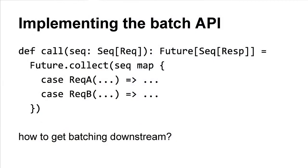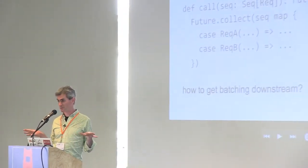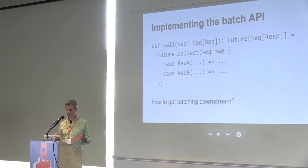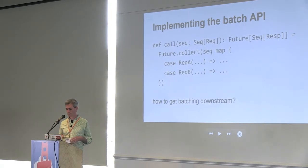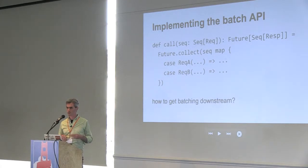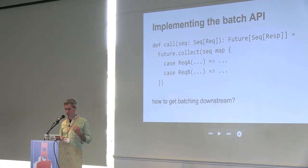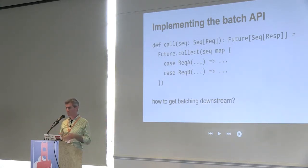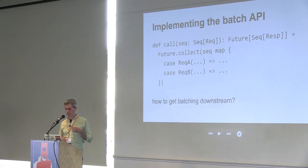This problem also comes up on the server side, where we want to implement a heterogeneous batch API. We've got a sequence of requests that can be of any type, and we want to handle them all concurrently. It's very typical that in handling these requests we're passing things off to some deeper level of the service stack, and those services below us also take batch APIs. So what we want to do is, in a clean way, process each request individually, but still get batching when we call the next layer of services. This is actually really a pain. What you'd like to do is just map a request handler over the things and collect up all the responses asynchronously, but that doesn't actually achieve any batching. So you're sort of forced to keep track of which requests resulted in which downstream requests, and then put everything back together as you return it up.